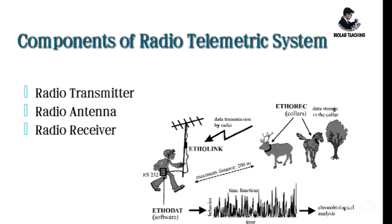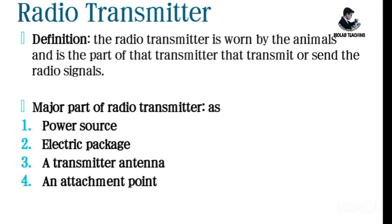Let's talk about the components of the radio telemetry system — what components and factors are present. In a radio telemetric system, the first one is a radio transmitter, the second is the radio antenna, and the third one is the radio receiver. Let's first talk about the radio transmitter.